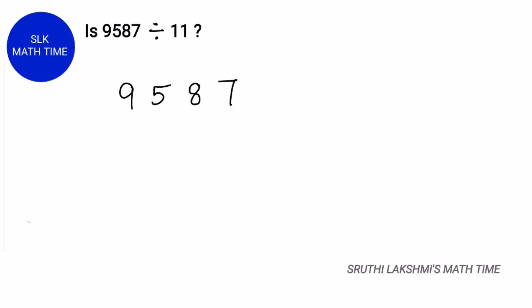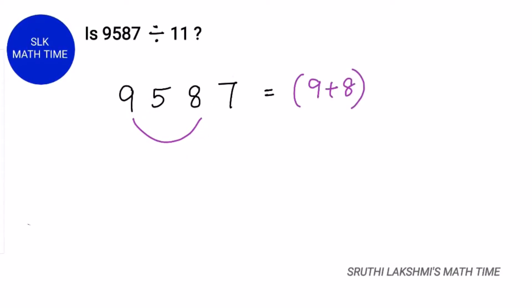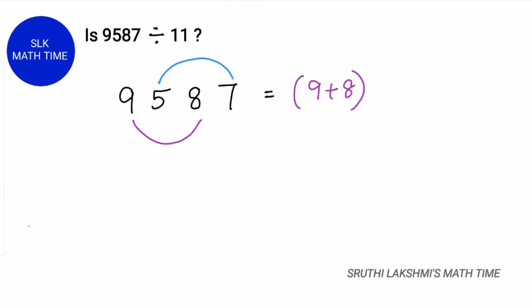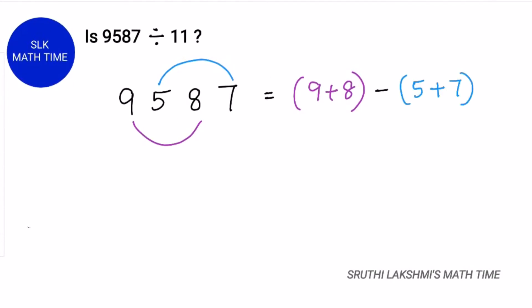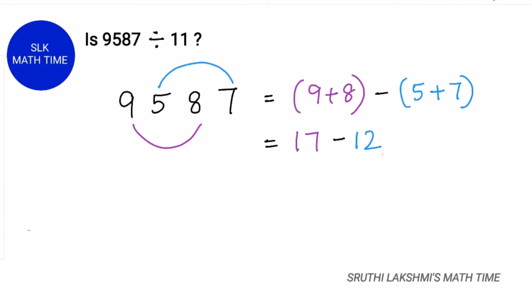Is 9587 divisible by 11? The alternative digits here are 9 and 8, so we add them: 9 plus 8. The other pair of alternative digits is 5 and 7, so we add 5 and 7. So, 9 plus 8 is 17, and 5 plus 7 is 12. So, 17 minus 12 is 5.